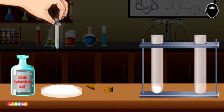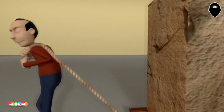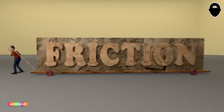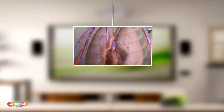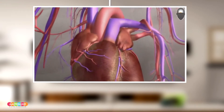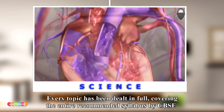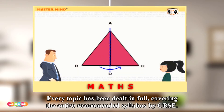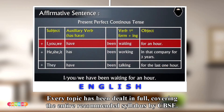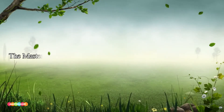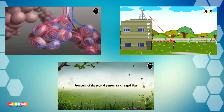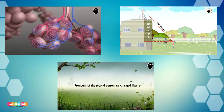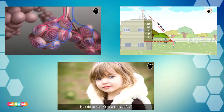2D animation, 3D animation, and live shots — making learning an exciting and enjoyable process. It will also enhance the interest and understanding level of the students. Every topic has been dealt with in full, covering the entire recommended syllabus by CBSE. The Mastermind digital content is available for 7th to 10th standard for Science, Maths, and English Grammar.